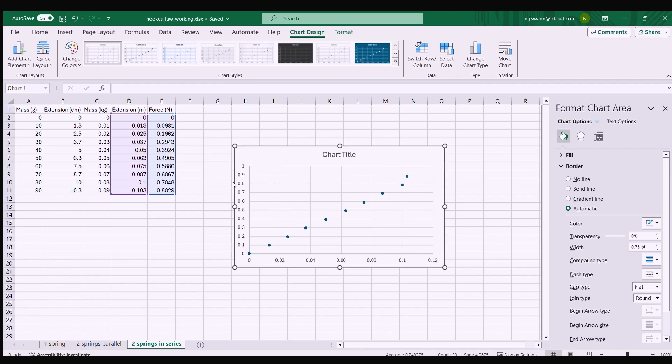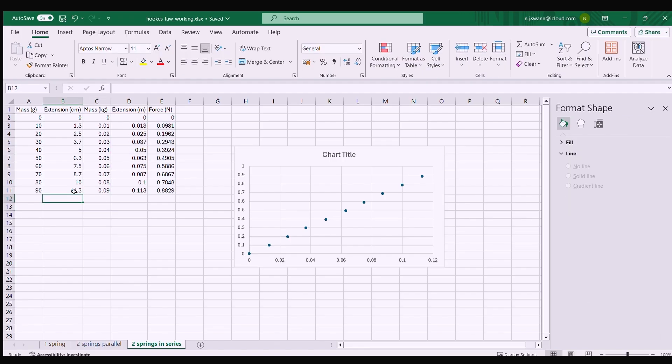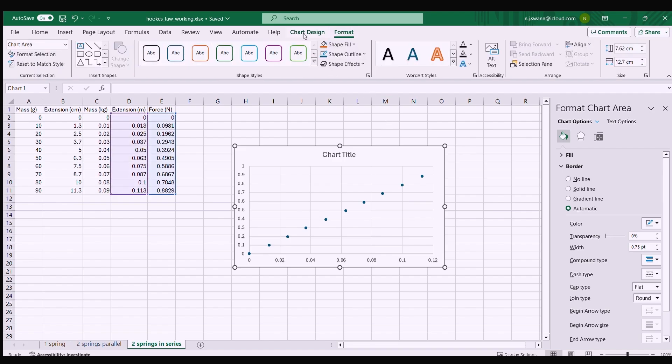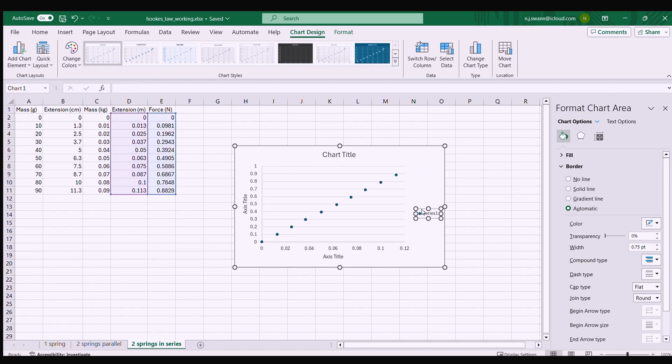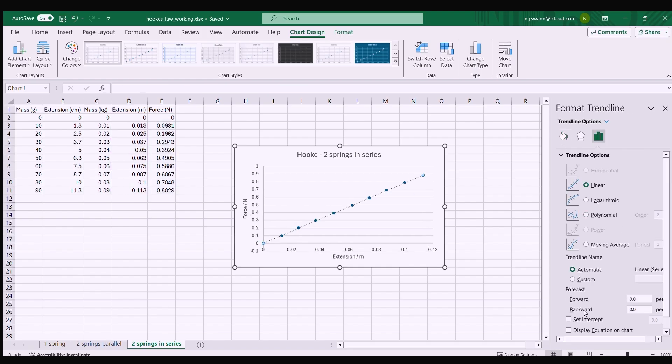And again I want to plot force on the y-axis against extension on the x. Oh something terrible has happened on the last one, what's gone on there? Ah I've done a typo, it wasn't 10.3 it was 11.3, much better. Right so let's put some axis labels on. So now I can add my trend line.